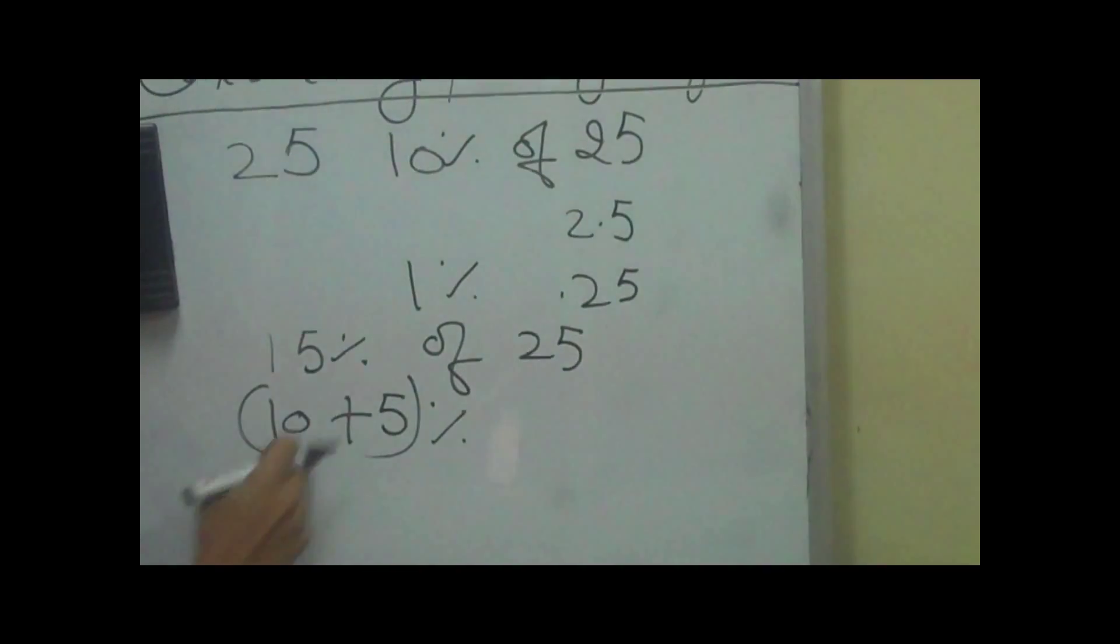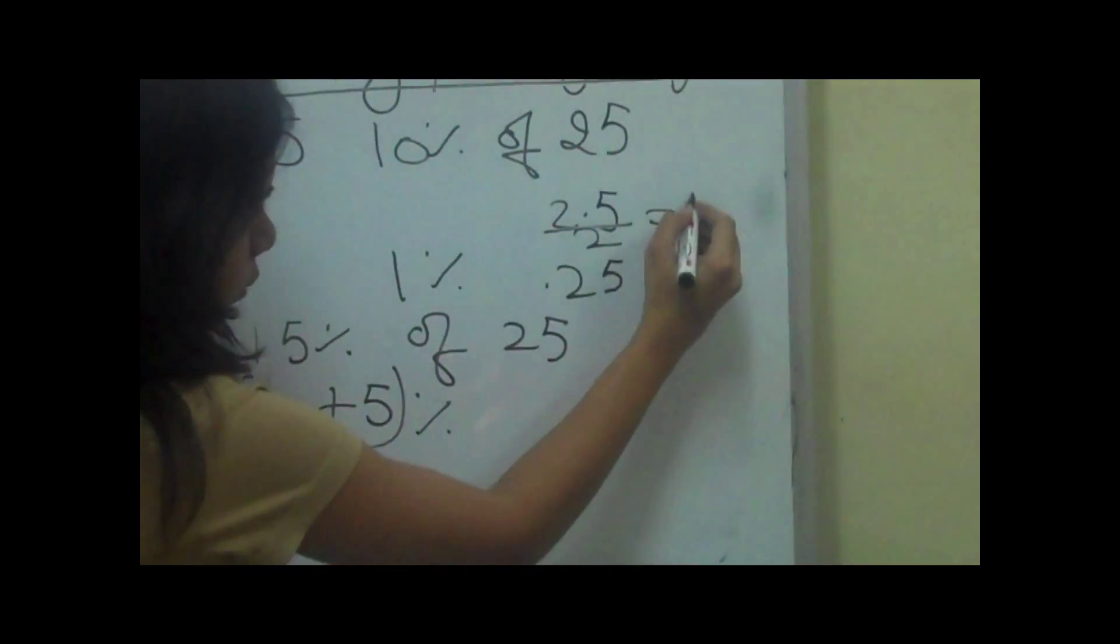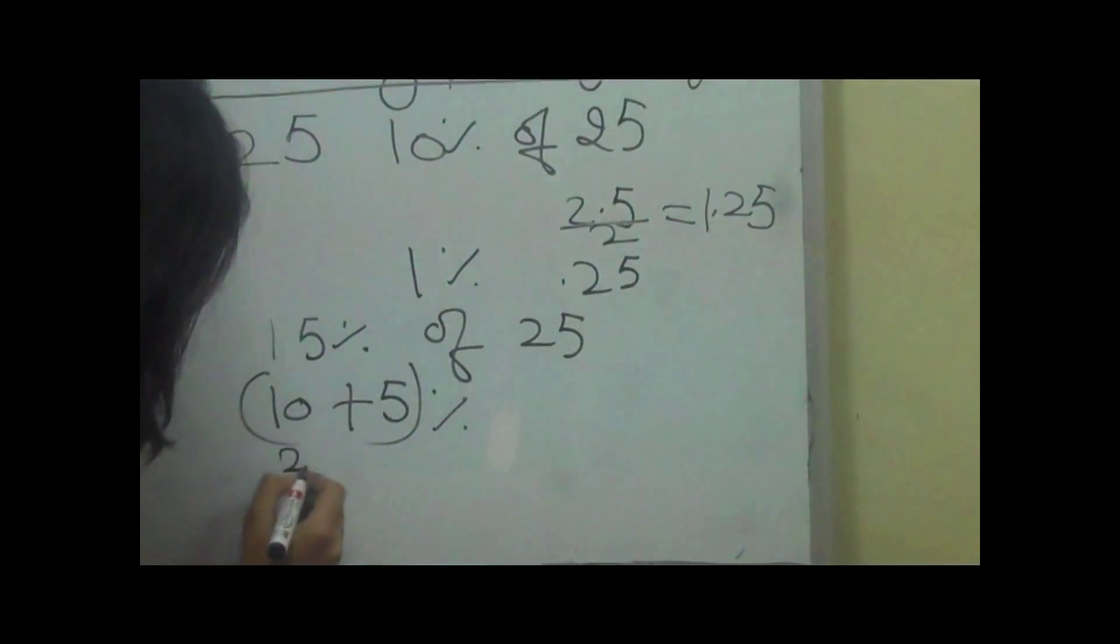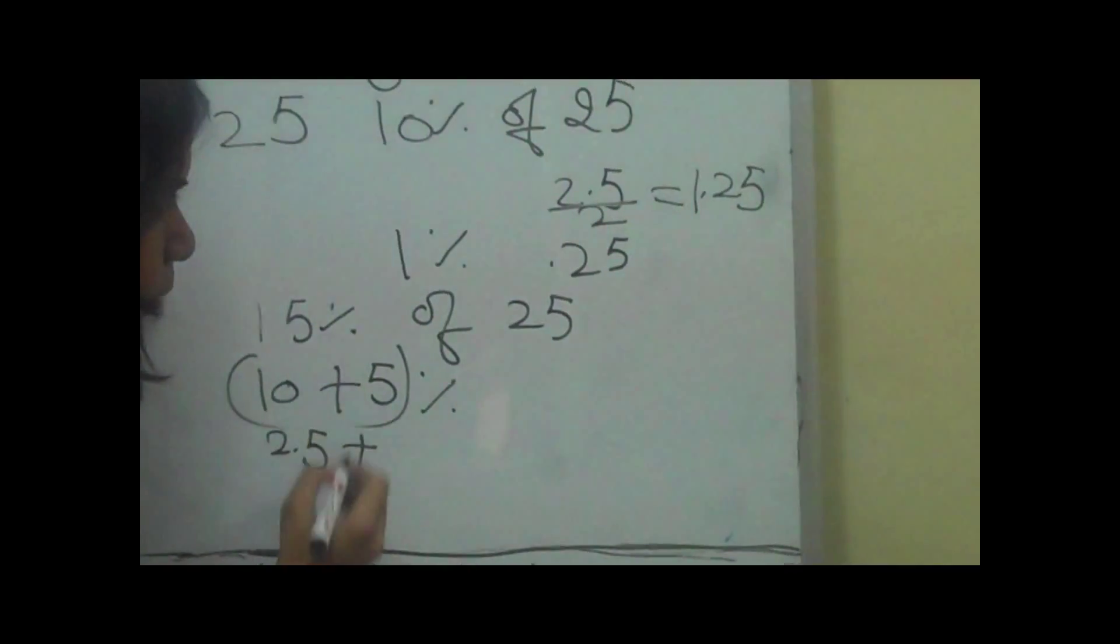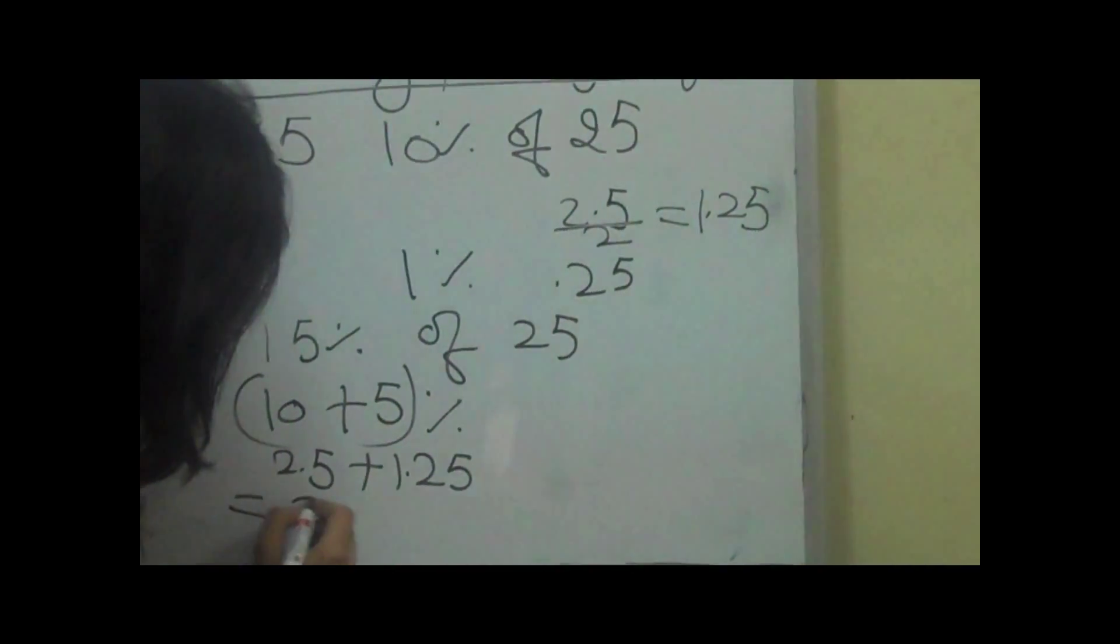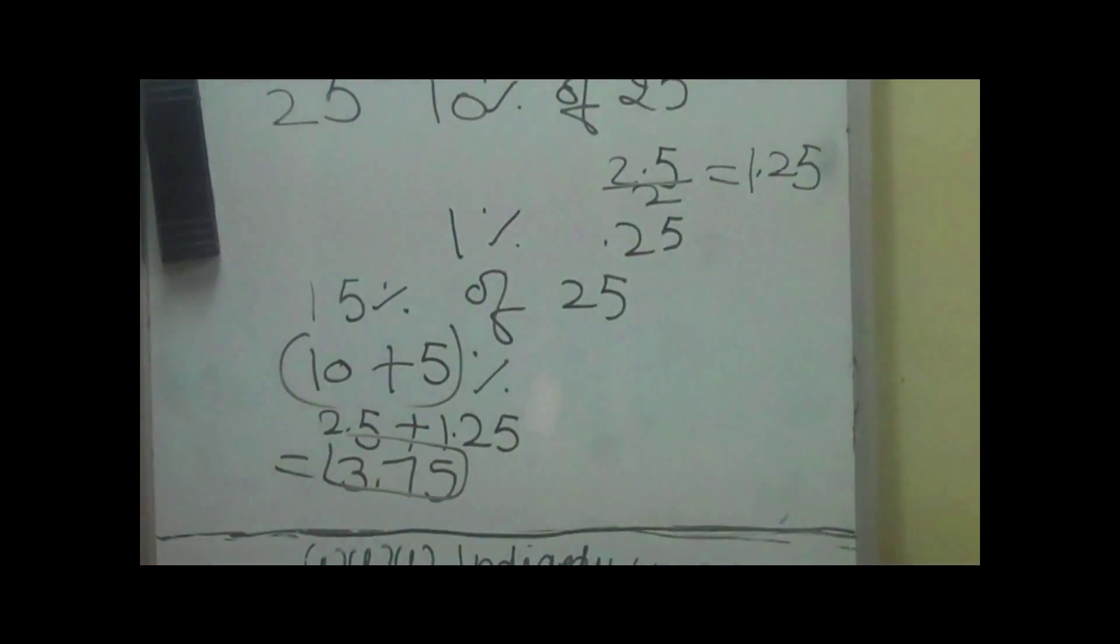We will divide this by half, which makes 1.25. Now, we know 10 percent is 2.5 and 5 percent is 1.25. We simply add them, which gives 3.75, and that's the answer.